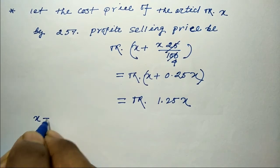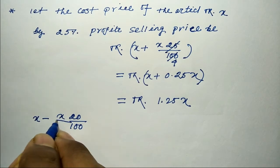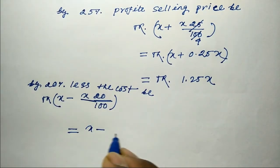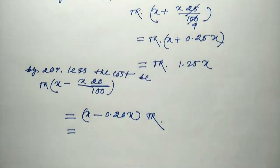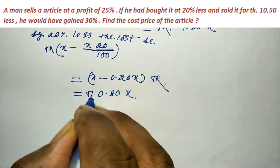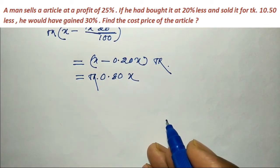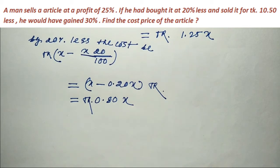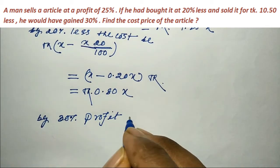The cost price is X. A 20% discount gives a selling price of 0.80X. If the next system followed, a 30% gain would be applied on cost price. So a 30% gain on the cost price gives a selling price with 30% profit.